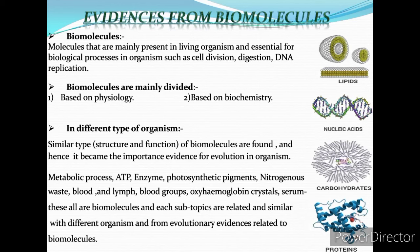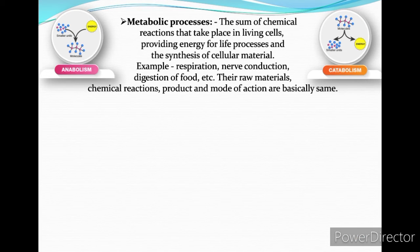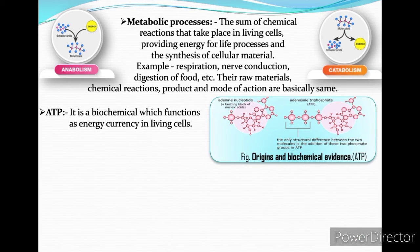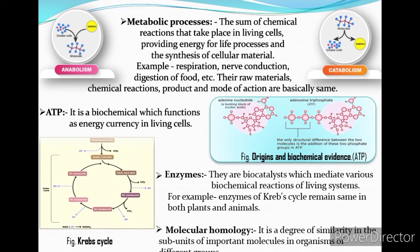Key biomolecules include metabolic processes, ATP, enzymes, photosynthesis pigments, nitrogenous waste, blood and lymph, blood groups, oxymyoglobin, and crystals. ATP functions as the energy currency in living cells. Enzymes are biocatalysts which mediate various biochemical reactions of living systems — for example, enzymes of the Krebs cycle remain the same in both plants and animals.